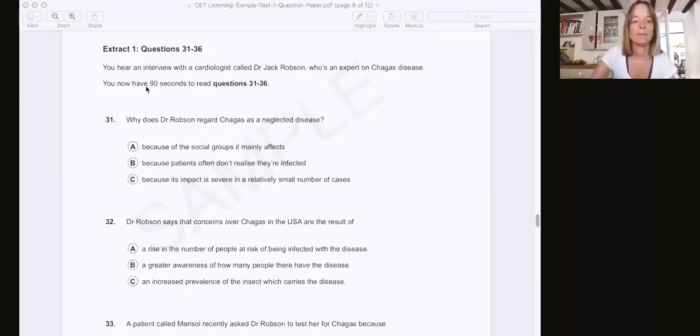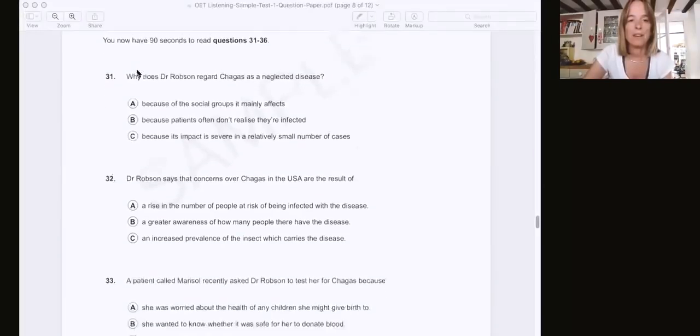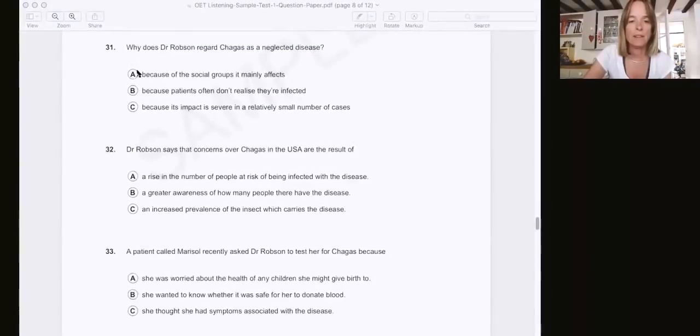Extract one, questions 31 to 36. You hear an interview with a cardiologist called Dr. Jack Robson, who's an expert on Chagas disease. You now have 90 seconds to read questions 31 to 36. So hopefully everyone has had a chance to read the questions. Obviously, it would be easier in the actual exam because you'd have a piece of paper in front of you, but we're doing the best we can.